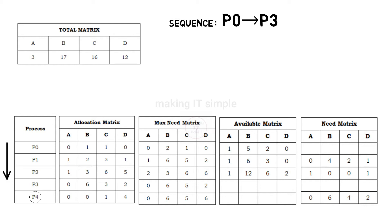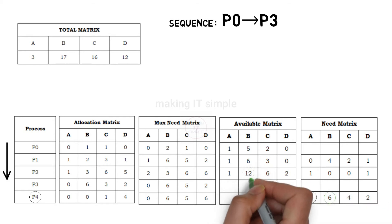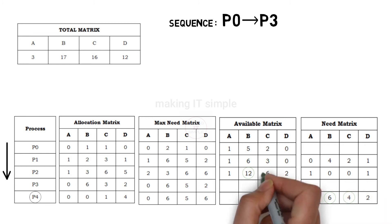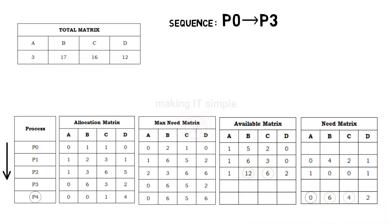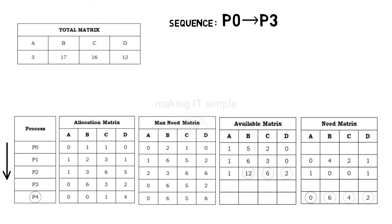So let us get back to the video. P4 requires 0 instances of resource A, 6 instances of resource B and we have 12 free, 4 instances of resource C and we have 6 free, and 2 instances of resource D and we have 2 of them. So we can provide the required number of resources to P4.